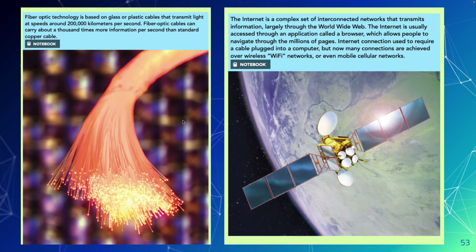Fiber optic technology is based on glass or plastic cables that transmit light at speeds around 200,000 kilometers per second. Fiber optic cables can carry about a thousand times more information per second than standard copper cable. Again, identify a benefit and a drawback of this technology.